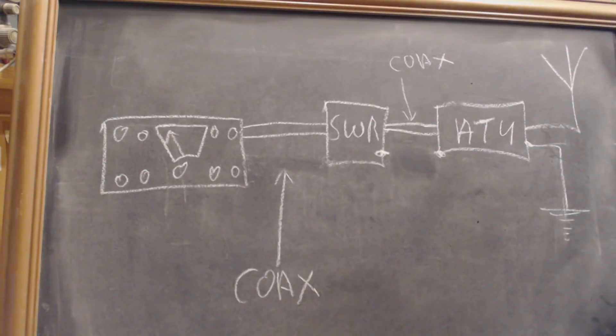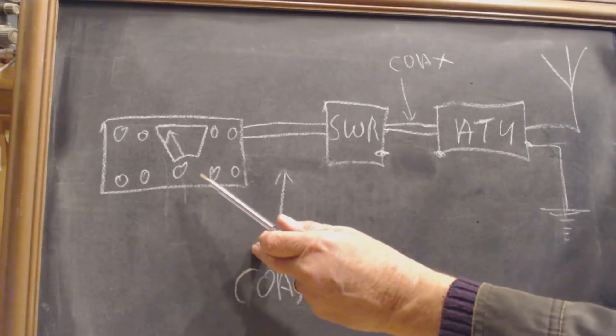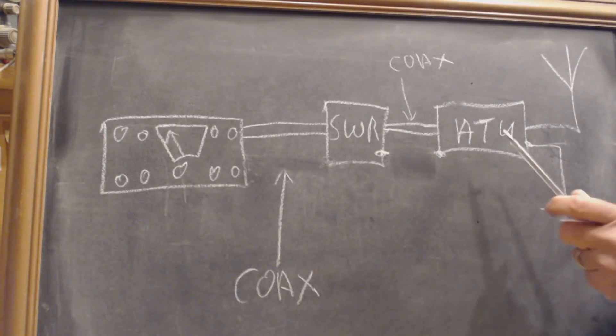We're now receiving, adjust the ATU's controls for maximum noise in the receiver, that gets this somewhere close to where we want to be, so you tune this up for maximum noise in the receiver.